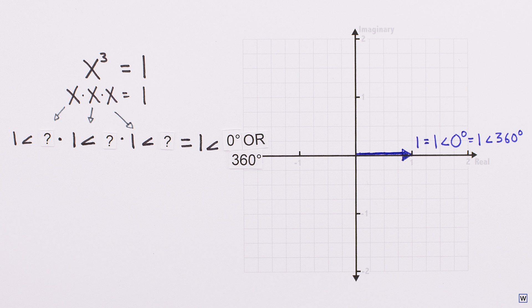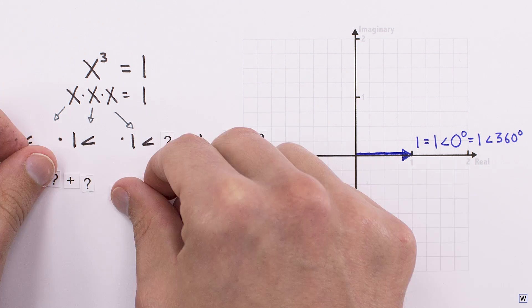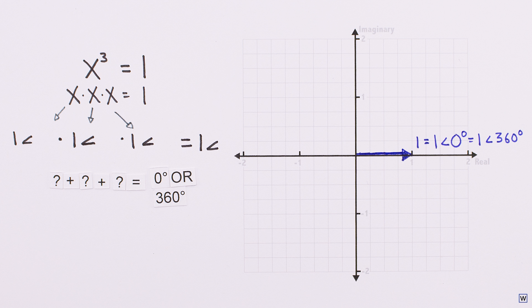But what about our angles? We know that when multiplying complex numbers, our angles add, so we need an angle that when added together 3 times gives 0, or 360. 360 seems a little more reasonable, so what's the correct angle here?